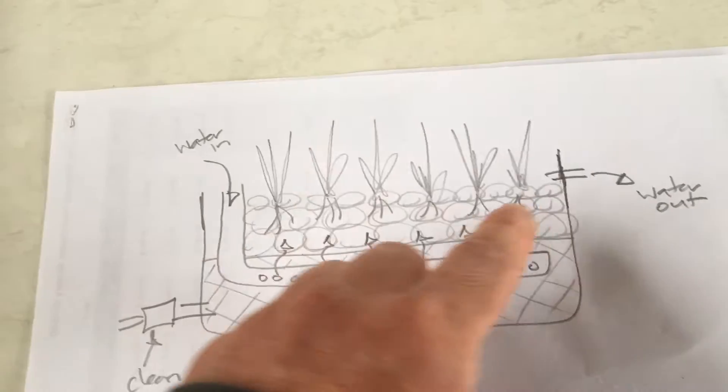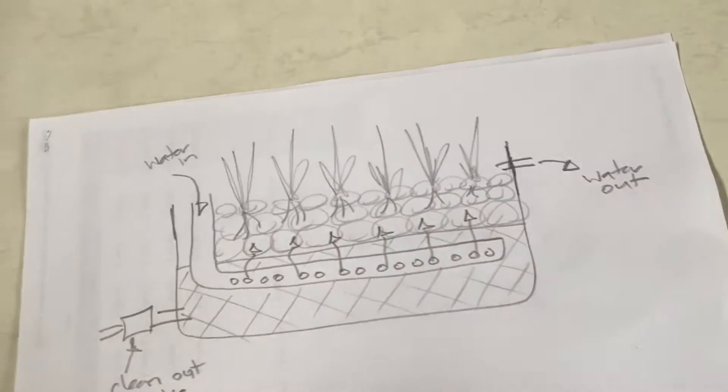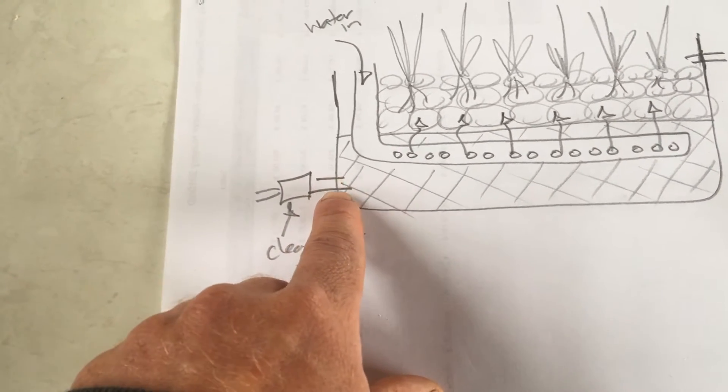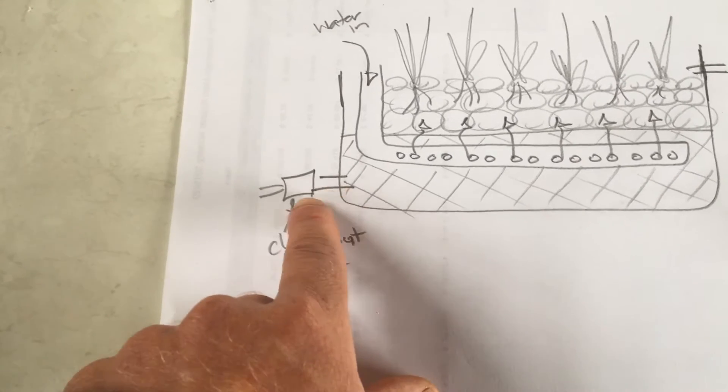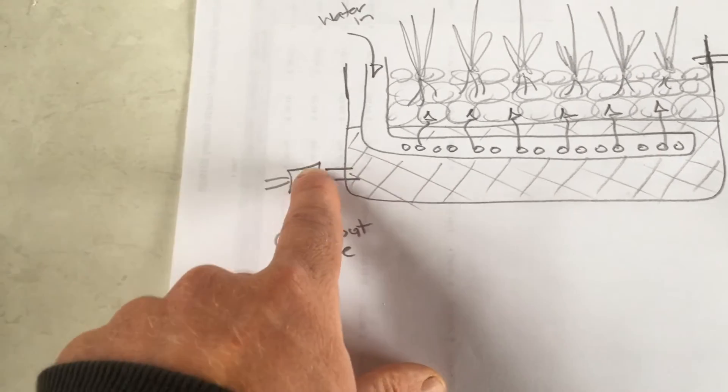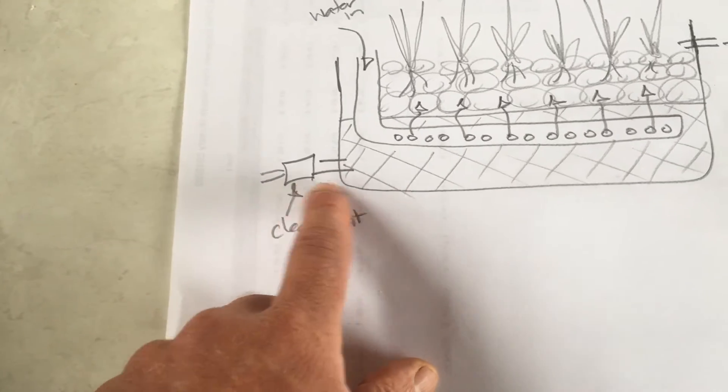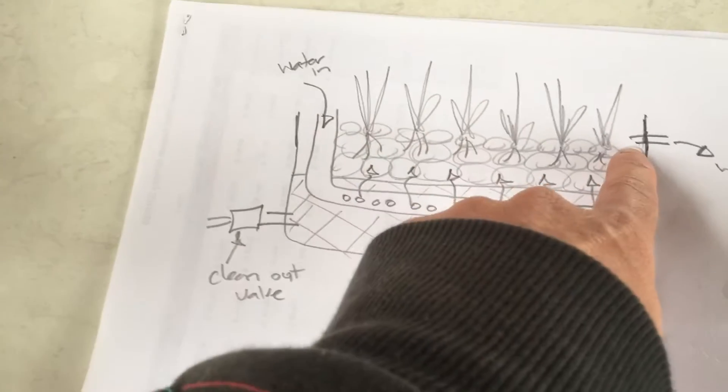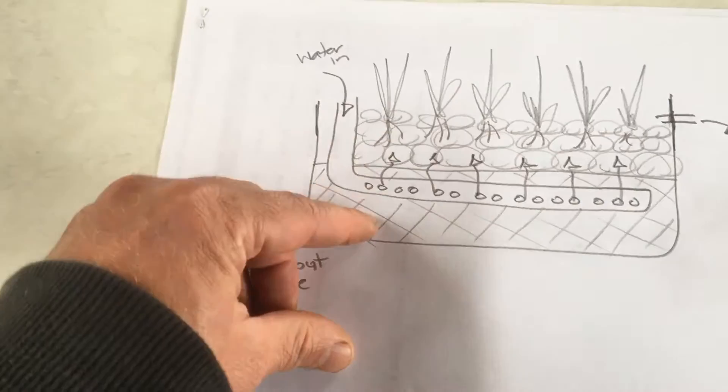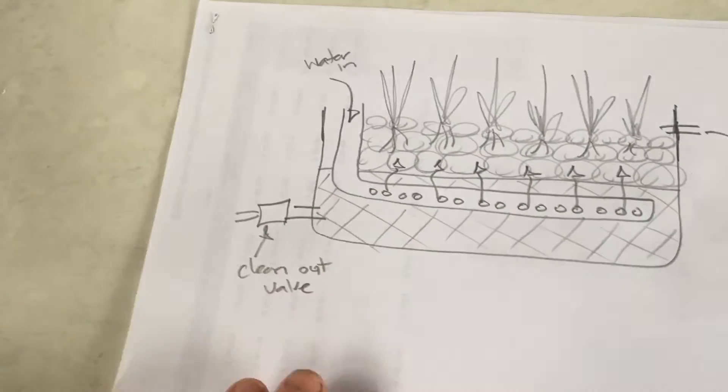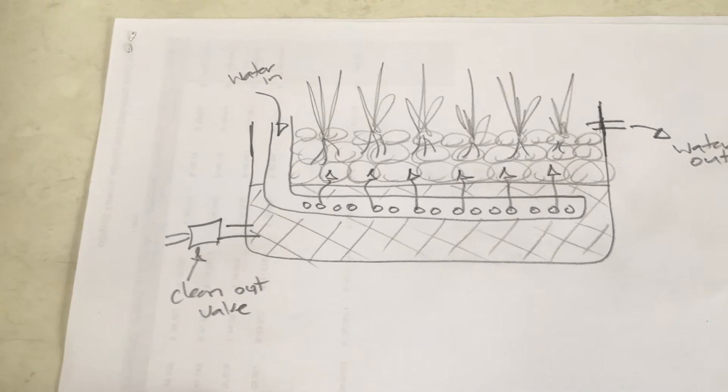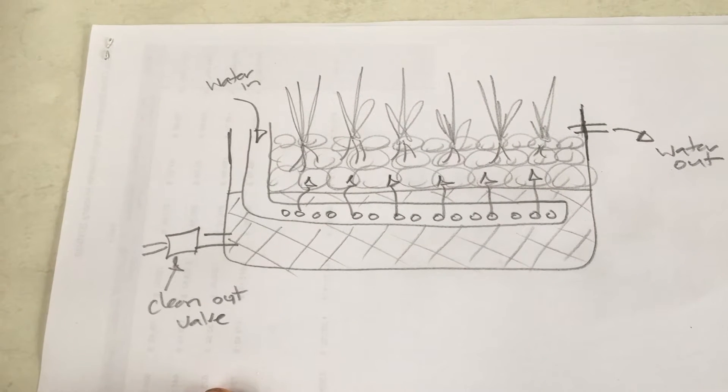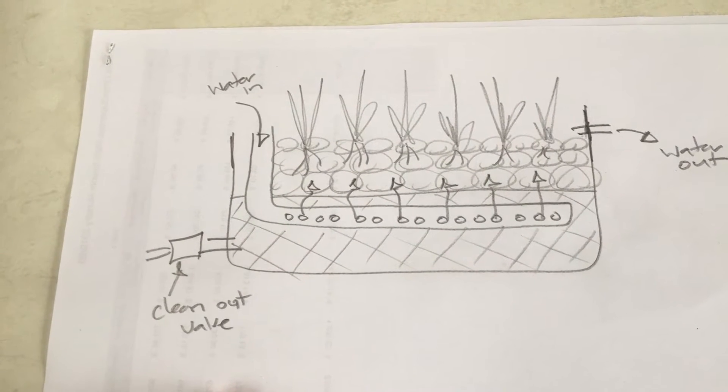The water comes up, gets purified, flows out. To clean these I always just put like a bulkhead fitting down the bottom here. On the piece of pipe that comes through, a little valve so I can open and shut that. Because this is always full, if I open that valve the water level drops and pushes all these solids out through the clean out valve. And that's been really easy, very simple to clean if the need arises and really easy to build.